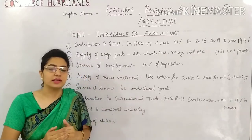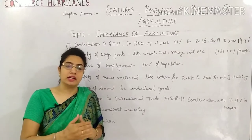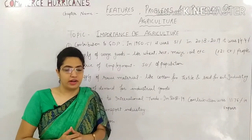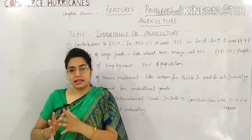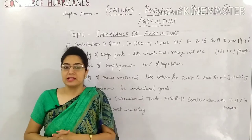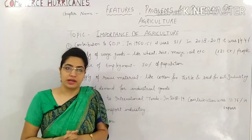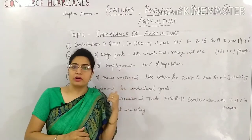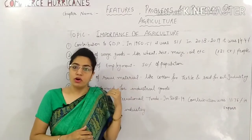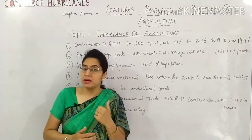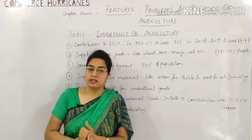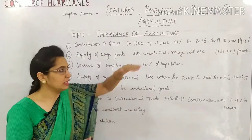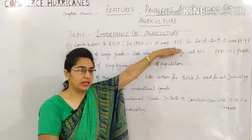The reason the contribution has reduced is that people are starting to move to the secondary and tertiary sectors. They are moving from rural areas to urban places and taking up jobs. So our agriculture sector's contribution has declined somewhat. But we will still say that agriculture is very important for us because even today it is contributing to GDP.